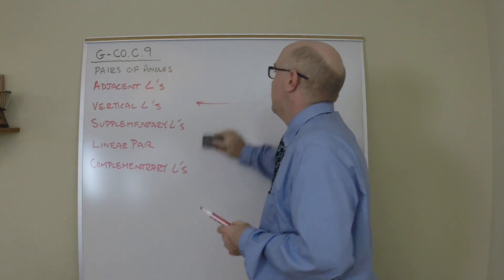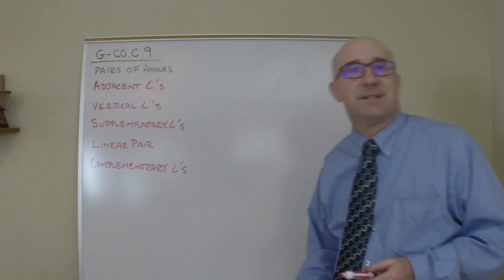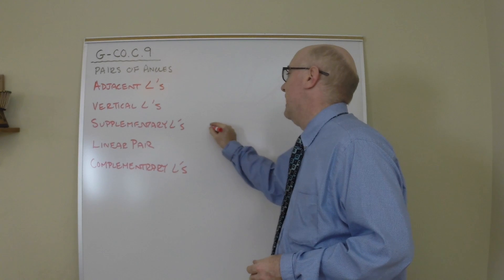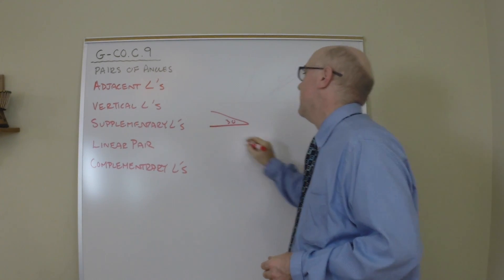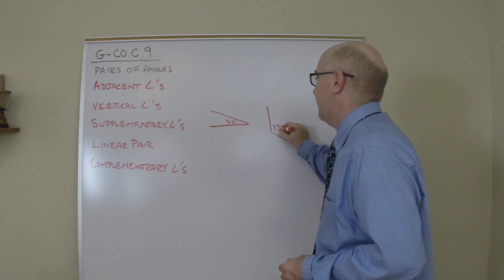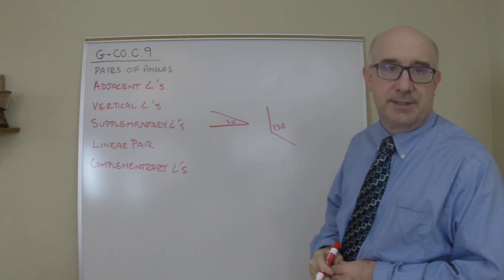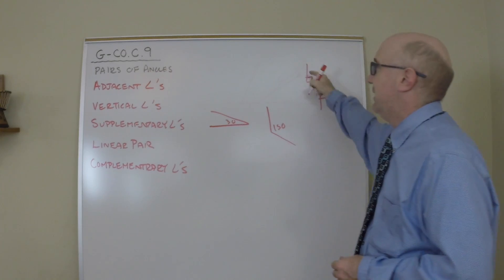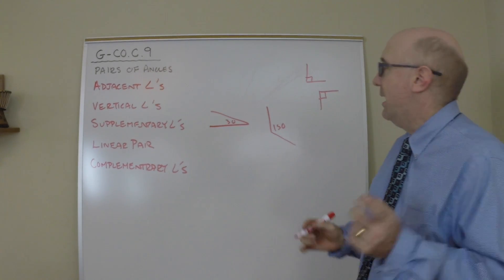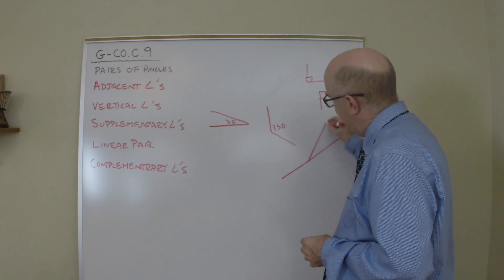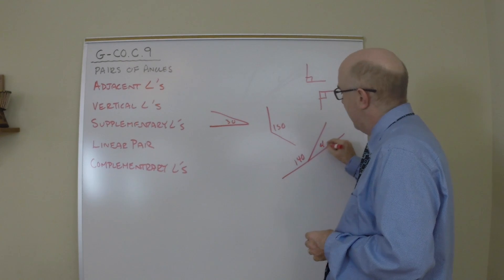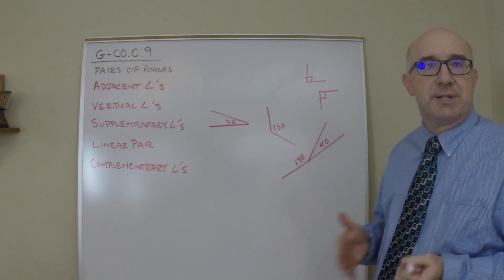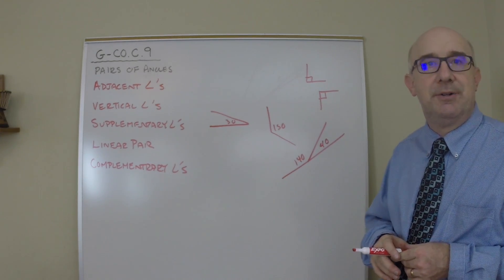Next, supplementary angles are angles that sum to 180 degrees. So it might look like this angle here of 30 and this angle here of 150. These together are called supplements. It might be an angle of 90 and another angle of 90. These two are called supplements. Another environment where that takes place is here. We might have 140 and 40. These are also supplements. Supplements or supplementary angles are just those that add up to 180 degrees.